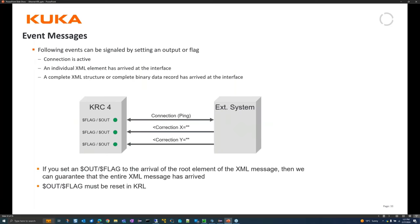Event messages: when a connection is active you can set an output or flag. When an individual XML element arrives you can set a specific flag - for example, only when 'Correction' arrives. When a complete XML structure, binary block, or stream arrives, you can also trigger an event. Important: if you set an output, you must reset it yourself in KRL - you wait for it, read the data, reset the flag, and move on.